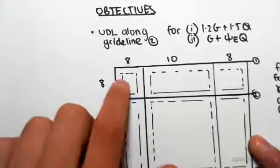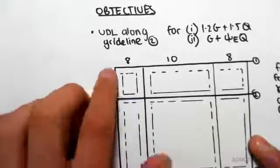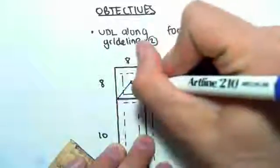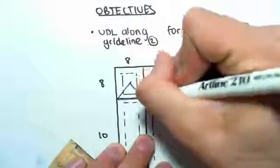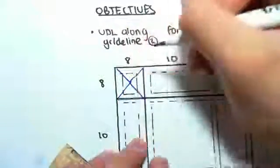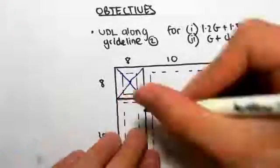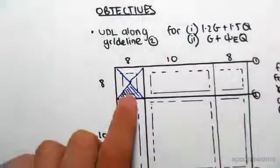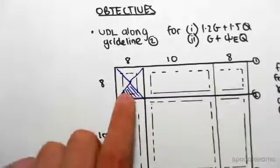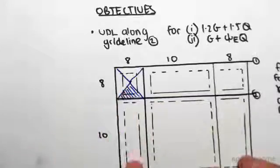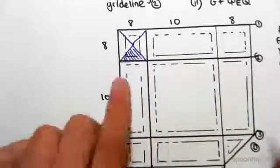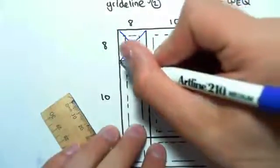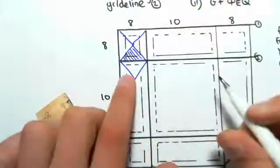For example, if you look at this one in the corner here — this eight by eight — it is a square, which means that the loading is going to distribute from the slab to the beams in triangles. So we're going to get that loading onto grid line 2 from that slab. This slab over here is a rectangle, and what's going to happen is it's going to form a triangle like this.